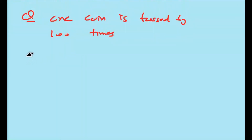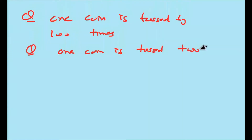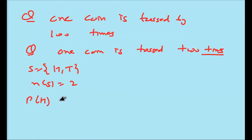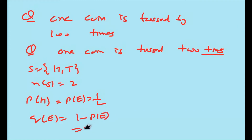Now I am taking a question: one coin is tossed two times. So S equals {H, T} only. The probability of getting a head p equals 1/2, and q equals 1 minus p equals 1 minus 1/2 equals 1/2. Here n equals 2 because the coin is tossed two times.